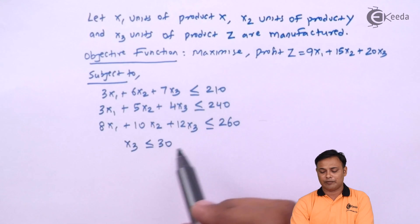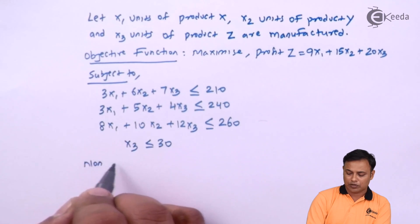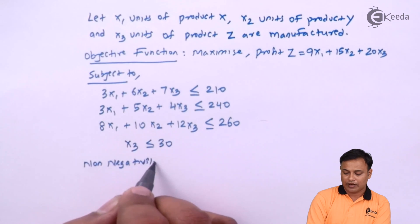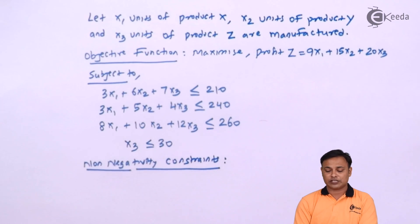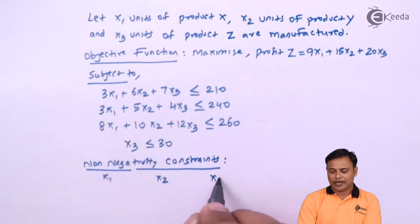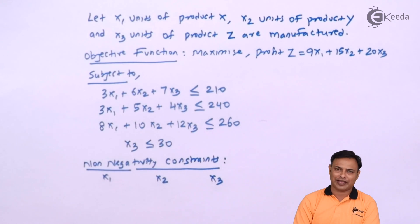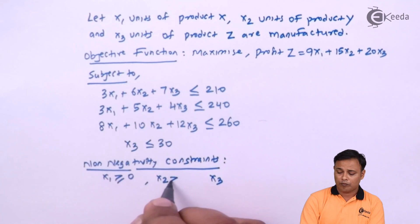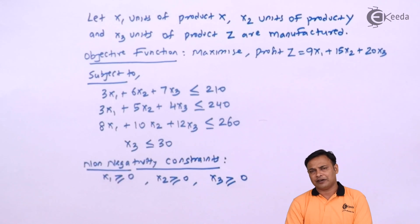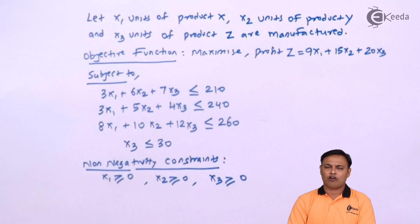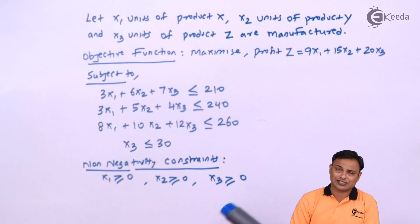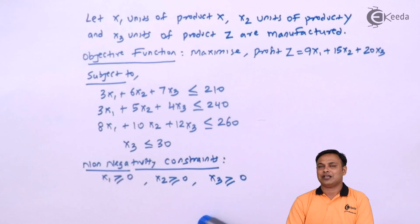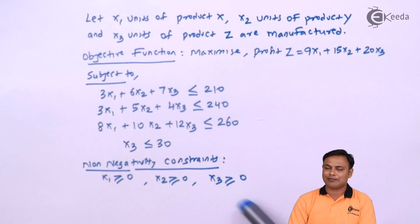So we have three resource constraints and one demand constraint. Now to make the problem technically possible or realistic, we will have non-negativity constraints: x1, x2 and x3 cannot be negative, meaning they will be either equal to zero or greater than zero. A point to be noted — students often take the non-negativity constraint as a formality and may ignore them in the exam, but if you don't write the non-negativity constraints, you are going to lose marks. Always write them to make your solution complete.